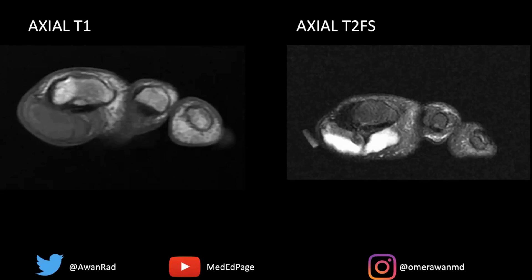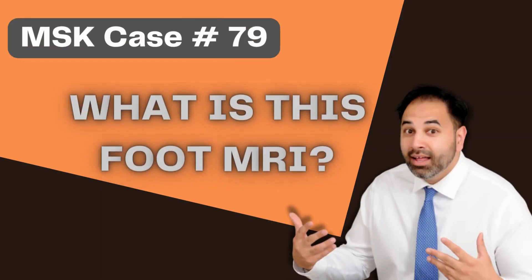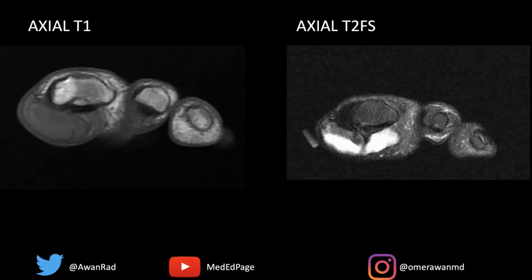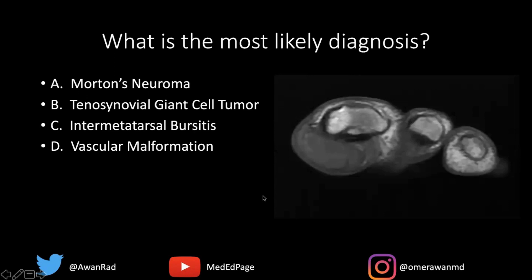Hello everyone, and welcome to MSK case number 79. We have an amazing case here, so let's go ahead and begin. We have an axial T1 and an axial T2 fat-saturated image through the toes. The marker is placed here on the medial aspect of the great toe. The high-yield question is: what's the most likely diagnosis?